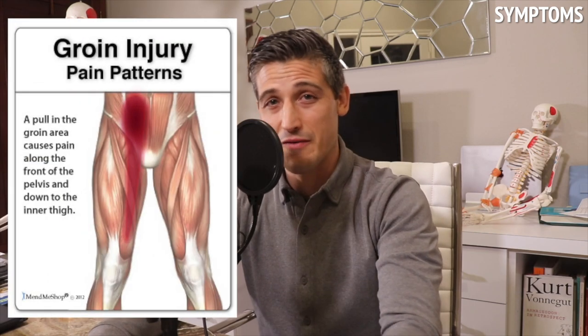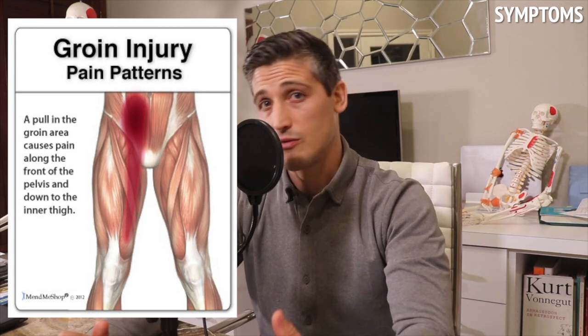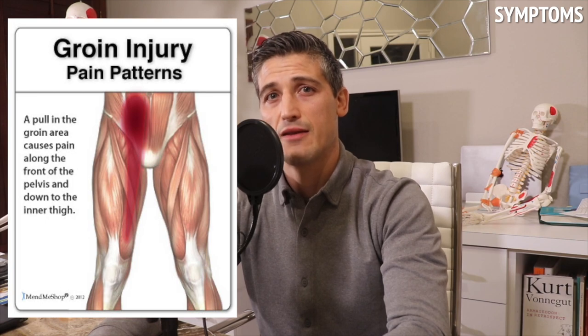So what does a groin strain feel like? It's pain from the pelvis and down the inner thigh. There can be swelling, warmth, and even bruising as the injured tissues bleed, as well as muscle cramping. There will certainly be weakness and pain with adduction of the hip, and pain when stretching the hip outward — abducting the hip.